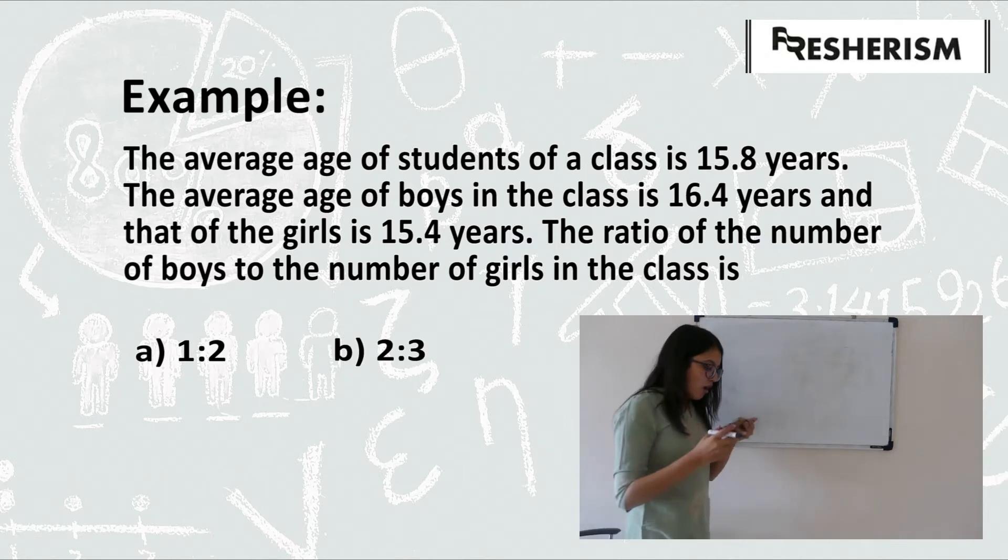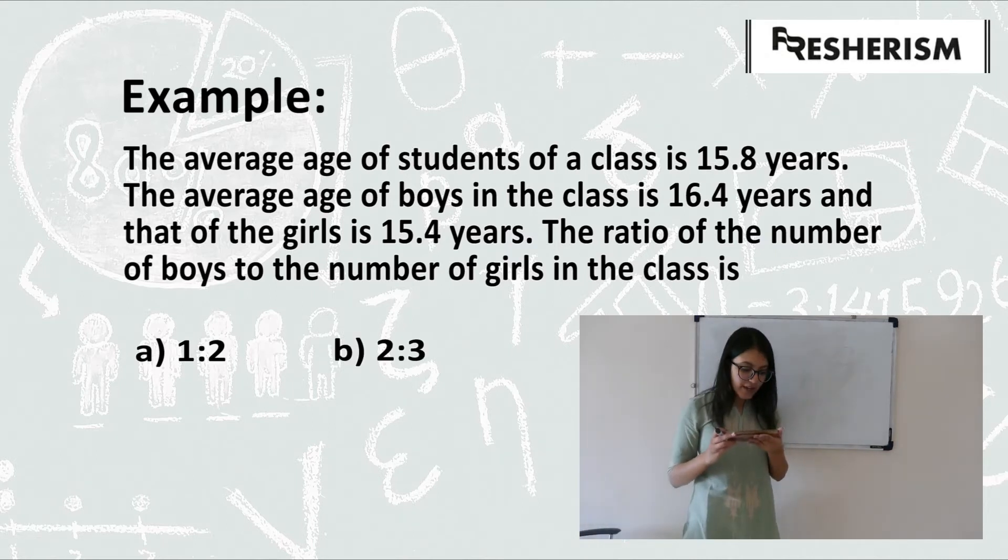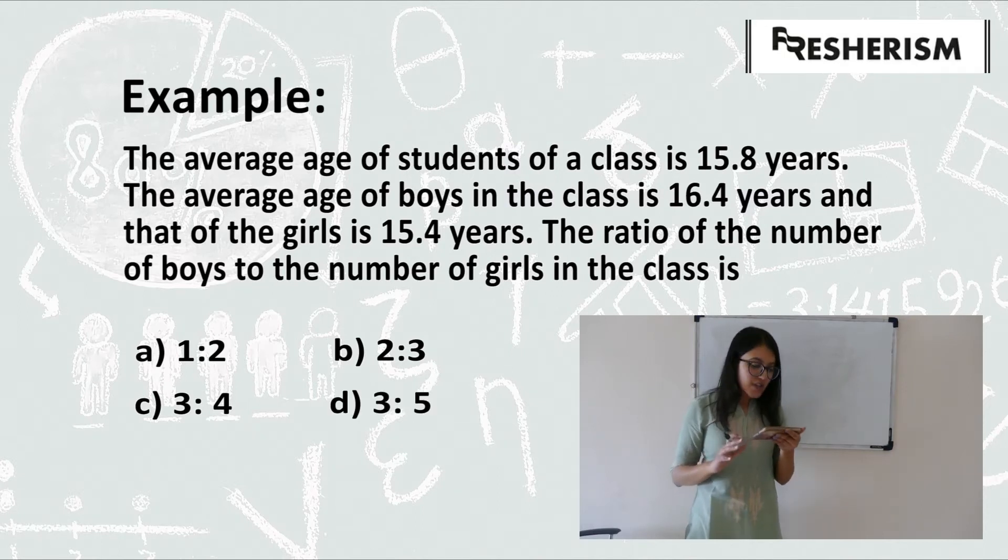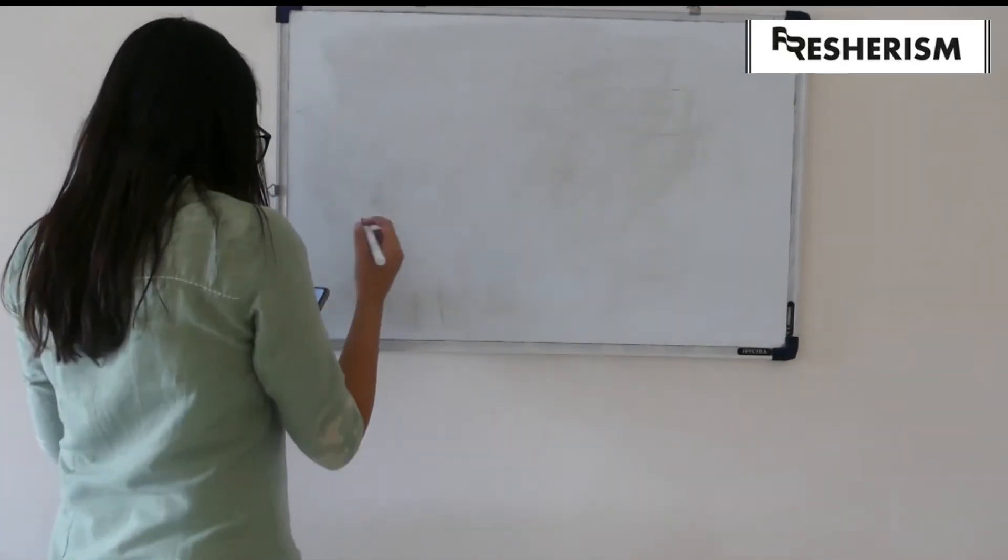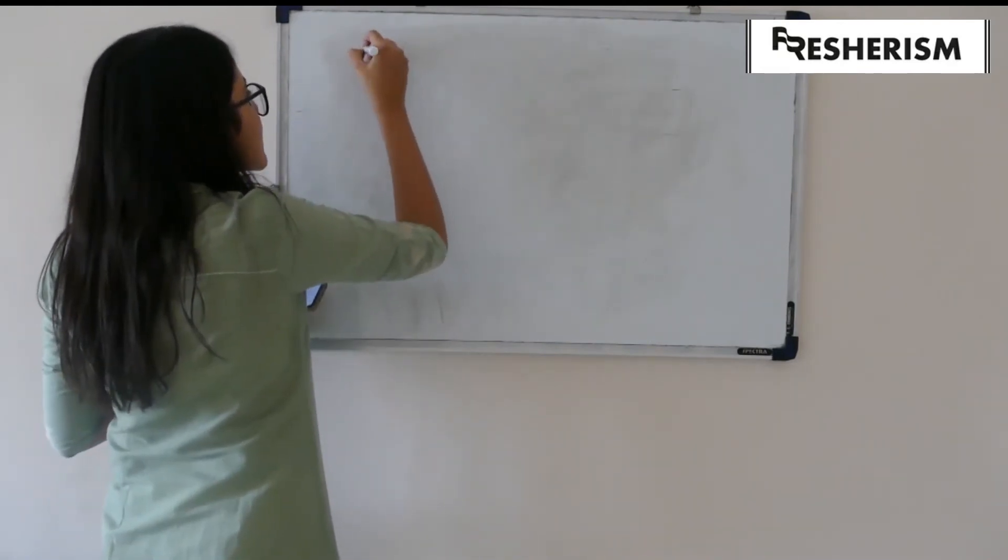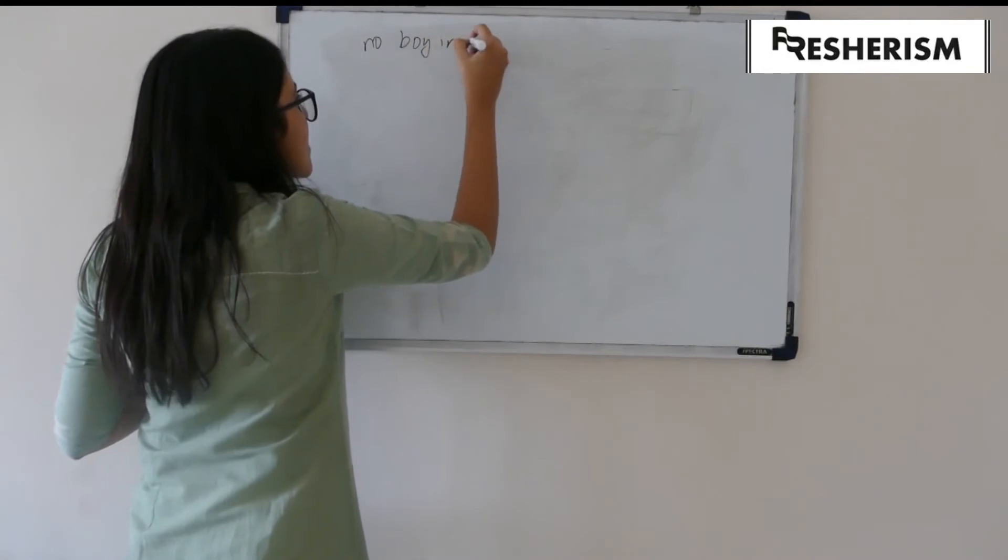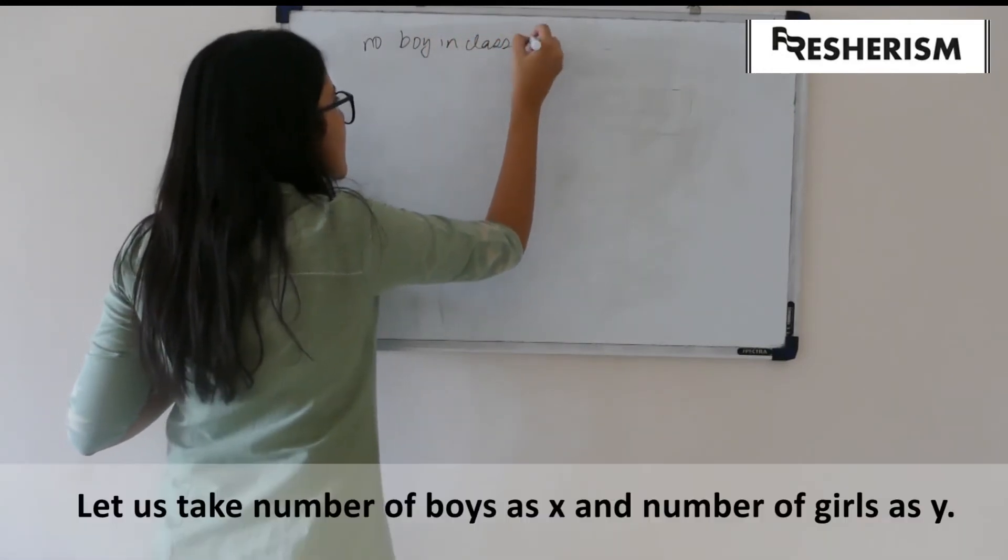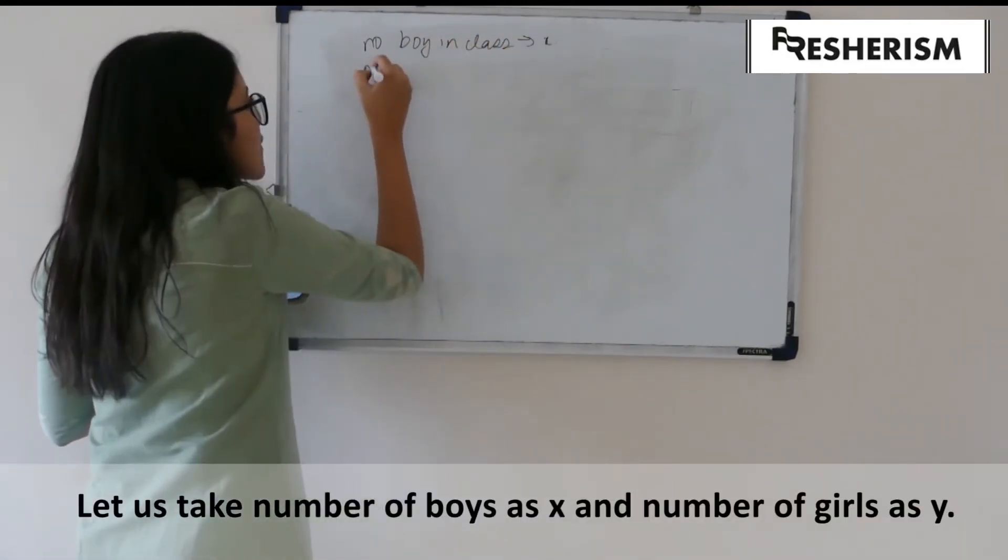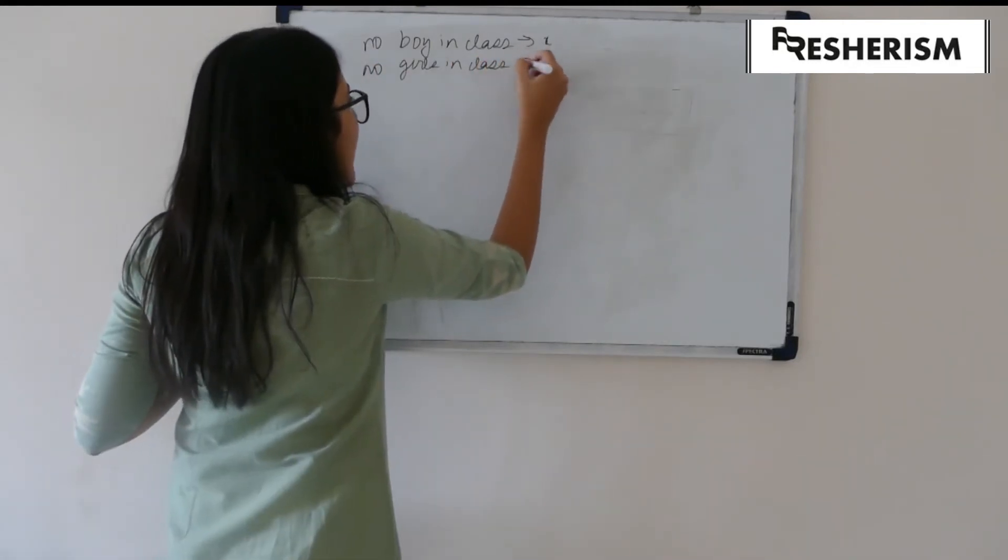The ratio of number of boys to number of girls in the class is: option A, 1 is to 2; option B, 2 is to 3; option C, 3 is to 4; and option D, 3 is to 5. Now, let us consider that the number of boys in the class are x and number of girls in class are y.